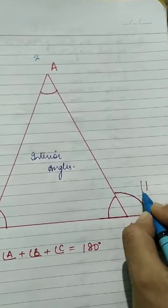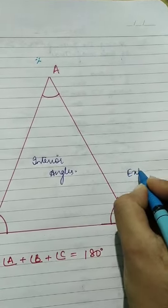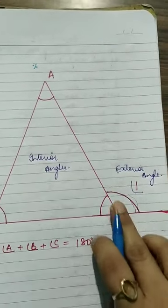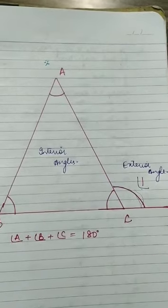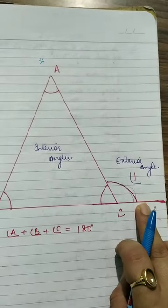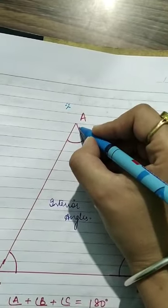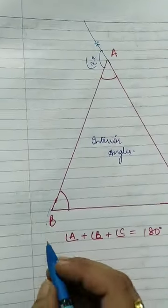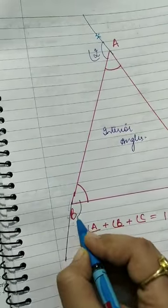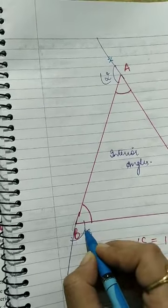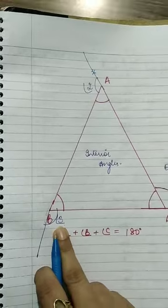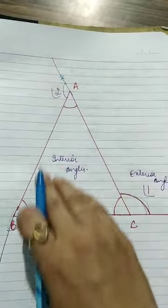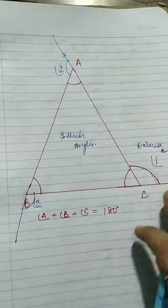Next, if I make an angle on the outer part over here, this angle - angle 1 - is known as the exterior angle. It is called an exterior angle because it is on the exterior, or outside, of the triangle. You can also extend another side to make angle 2, and another to make angle 3 - these are also exterior angles. Interior means inside, exterior means outside.